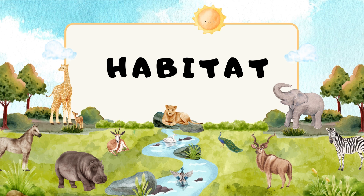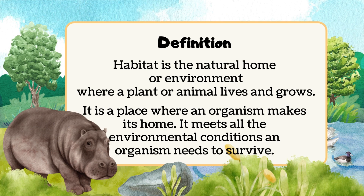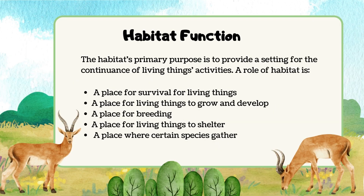Today we're going to learn about habitat. Habitat is the natural home or environment where a plant or animal lives and grows. It is a place where an organism makes its home. It meets all the environmental conditions an organism needs to survive. The habitat's primary purpose is to provide a setting for the continuance of living things' activities. These are the roles of habitat.